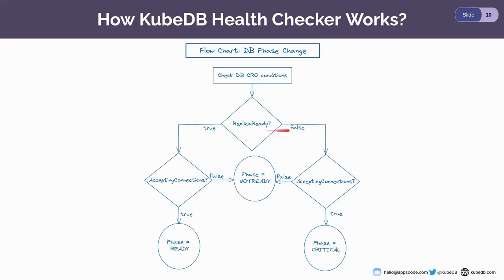But if the replicarity condition is false, it checks accepting connections again. If accepting connections is true, the phase is set to critical — meaning only some replicas are not ready but the database can still be connected using a client. However, if the accepting connections phase is false in any case, regardless of the replicarity value, the database phase will be considered as not ready. In that phase, the database cannot be used and you cannot create a client.